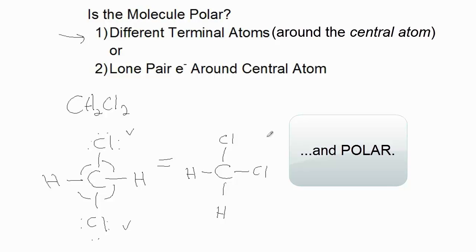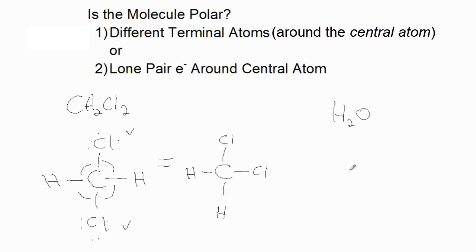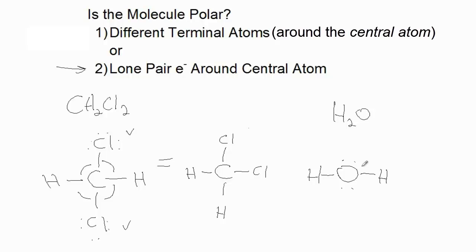Let's try another example: H2O. Oxygen is the central atom, and there are two hydrogens as the terminal atoms. Oxygen has its two lone pairs. Therefore, the second criteria is met — the central atom has lone pair electrons. The terminal atoms are both the same; they're both hydrogens, so the first criteria is not met. But only one of these criteria needs to be met for the molecule to be polar.